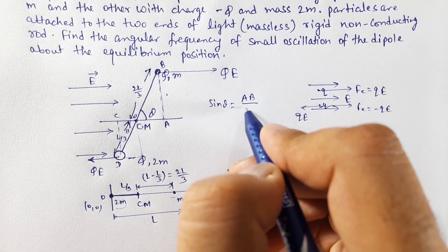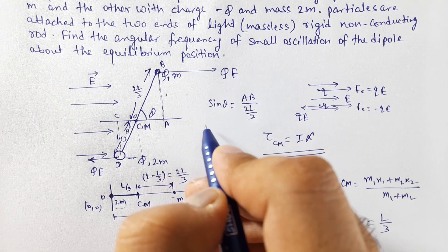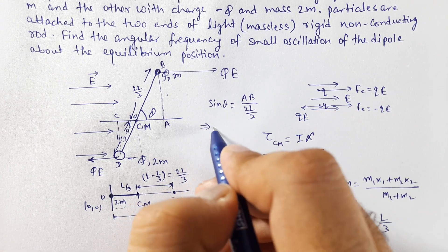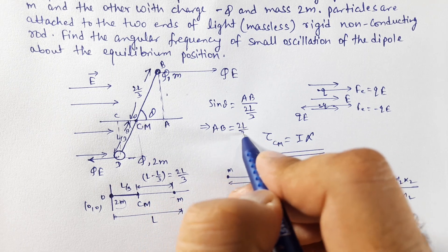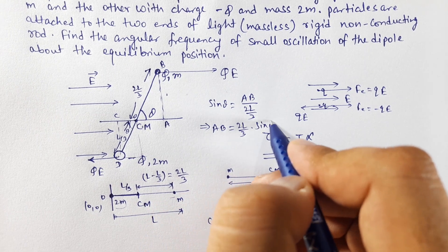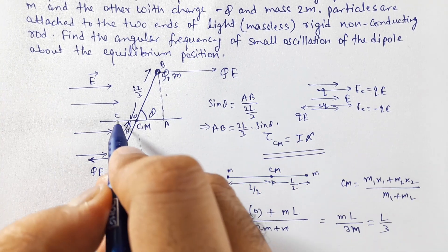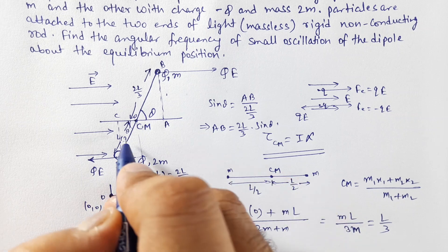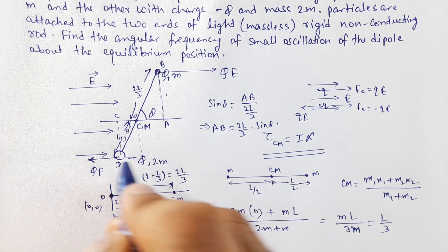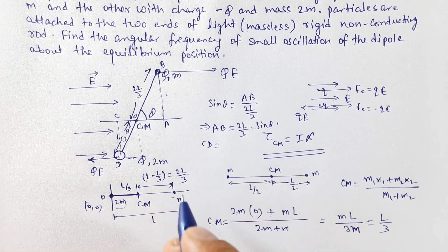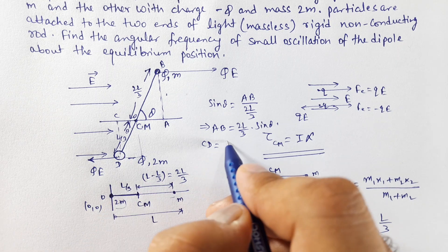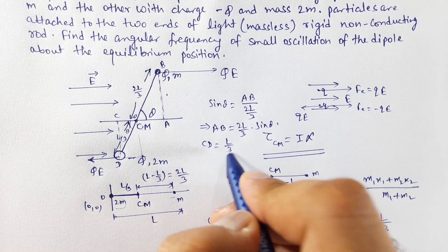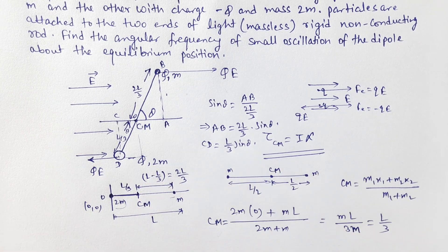When the rod is rotated by a small angle theta, the perpendicular distance AB from the center of mass to the line of force on charge m is 2L/3 times sin theta. Similarly, the perpendicular distance CD from the center of mass to the line of force on charge 2m is L/3 times sin theta.